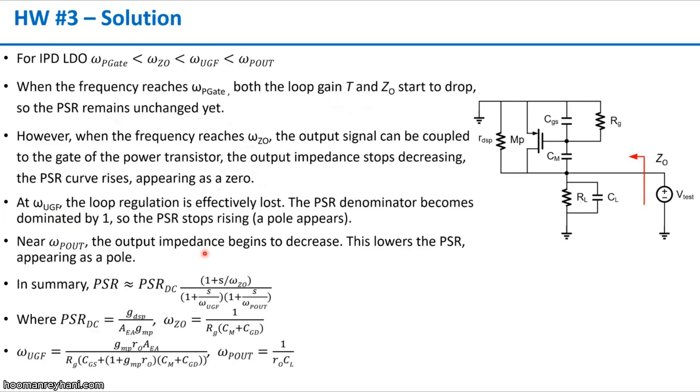We see another pole here. Near the output pole, the PSR becomes better because the load capacitance helps us to filter out the input ripple, the supply noise. In summary, in this case, the PSR will be the PSR DC times the zero from the output impedance of the power stage, and then we have the pole from the unit gain frequency and output pole frequency. That completes the analysis of this LDO with a Miller compensation with a dominant pole at the gate of the power transistor.